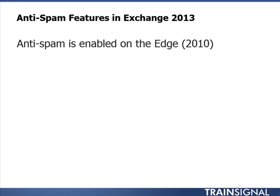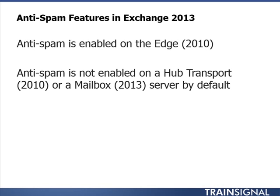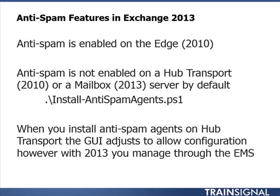However, if we're not working with an Edge, and our concern is an internal hub transport server running Exchange 2010 or a mailbox server running Exchange 2013, Anti-Spam is not enabled by default. If we want to enable the Anti-Spam agents on these servers, we need to run the install-anti-spam-agents.ps1 PowerShell script. When you install Anti-Spam agents on the hub transport server, the GUI — the Exchange Management Console — adjusts to allow configuration, adding a tab for Anti-Spam.